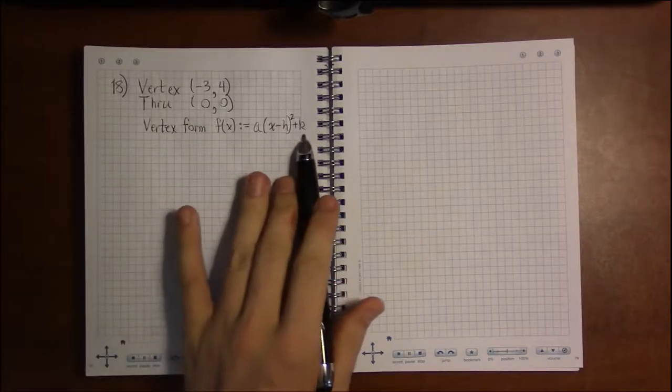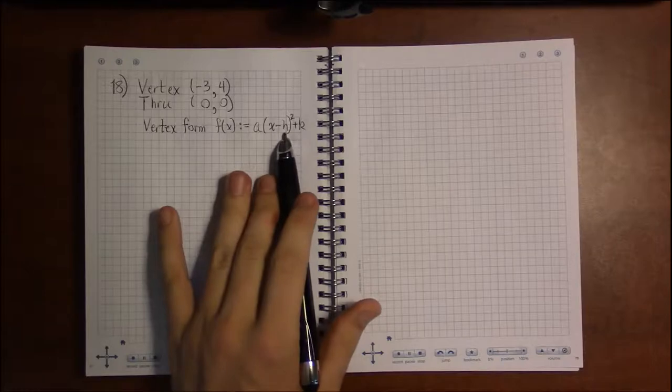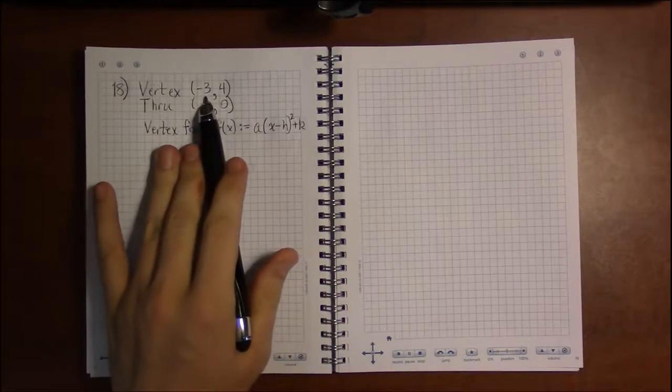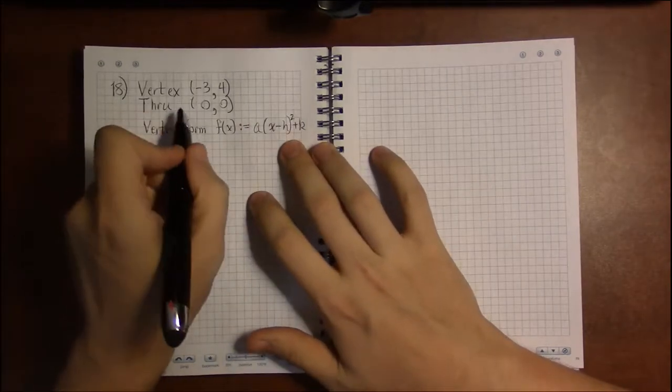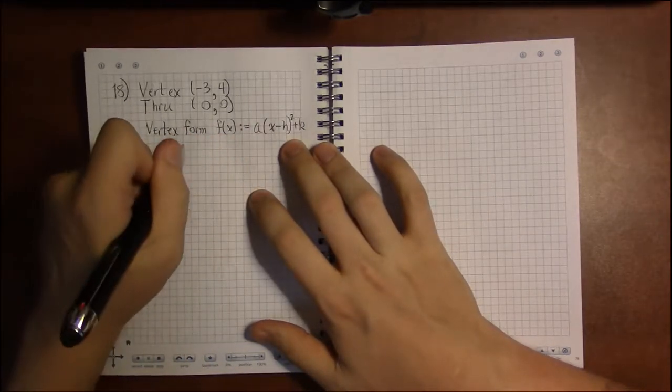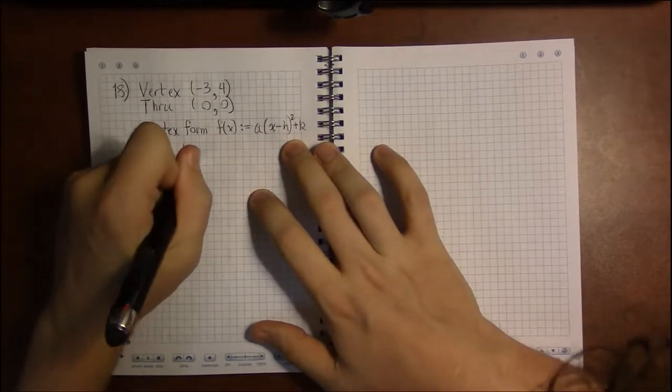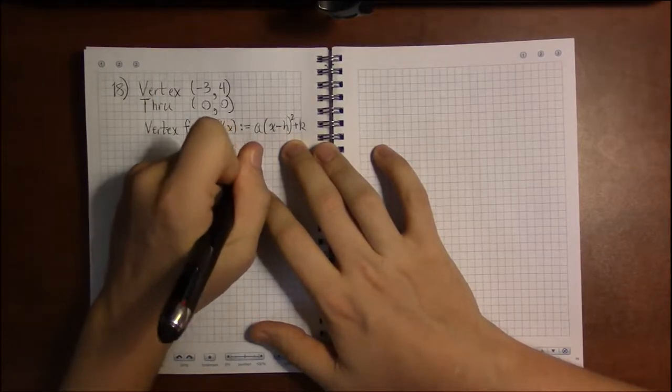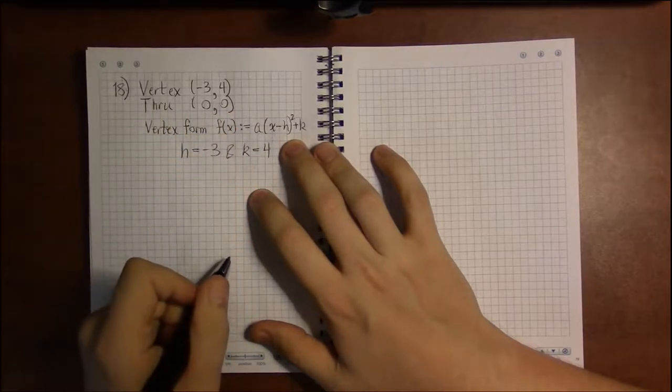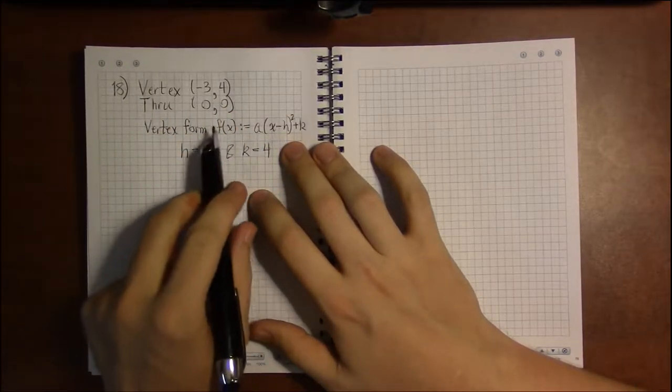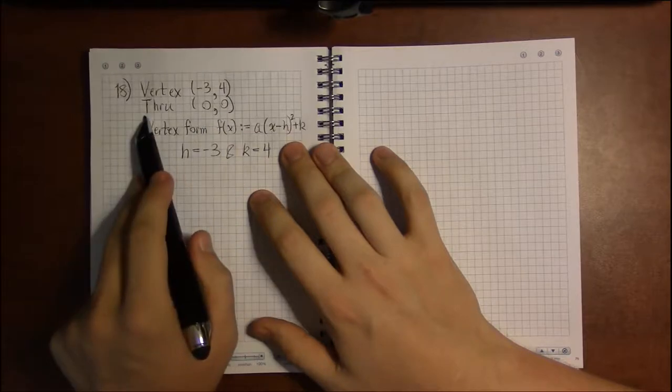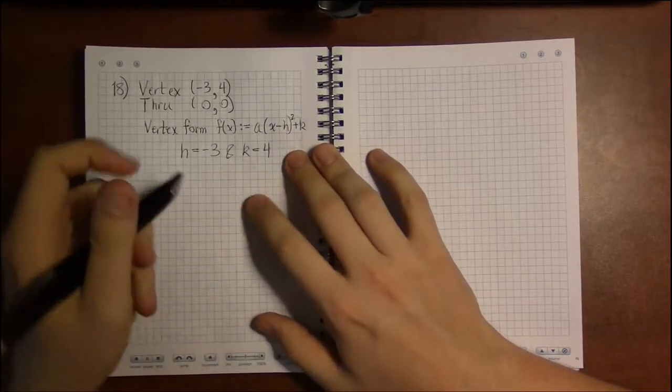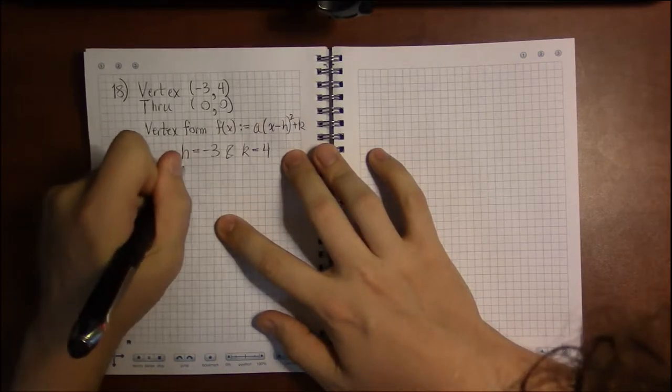Again, we use this because we can really quickly fill in the values for h and k because those are the x and y coordinates of the vertex. This first piece of information tells us that h is -3 and k is 4. Now all we have to do is use this other point to find out what a is.